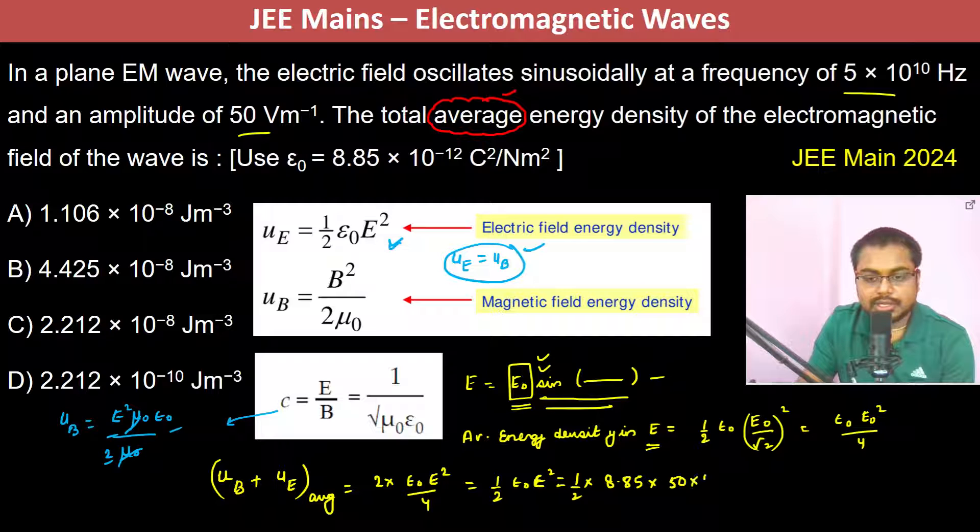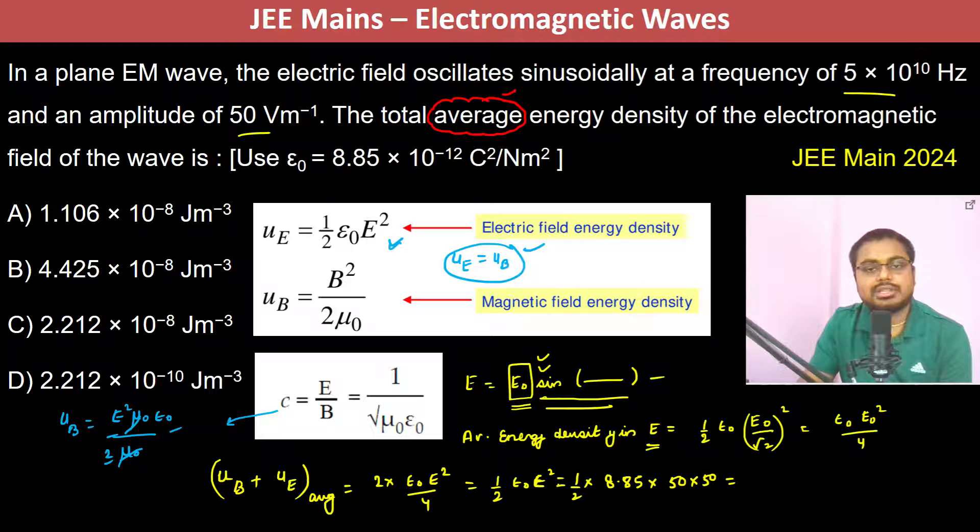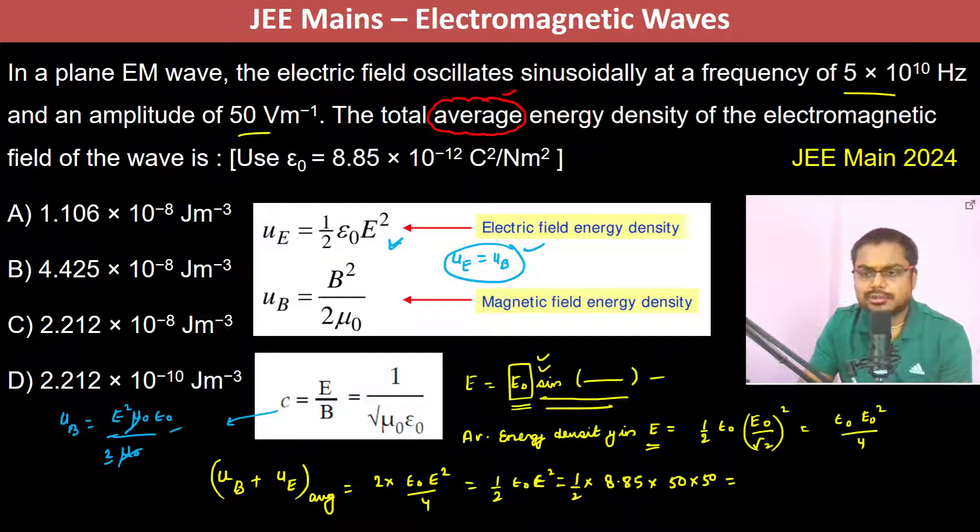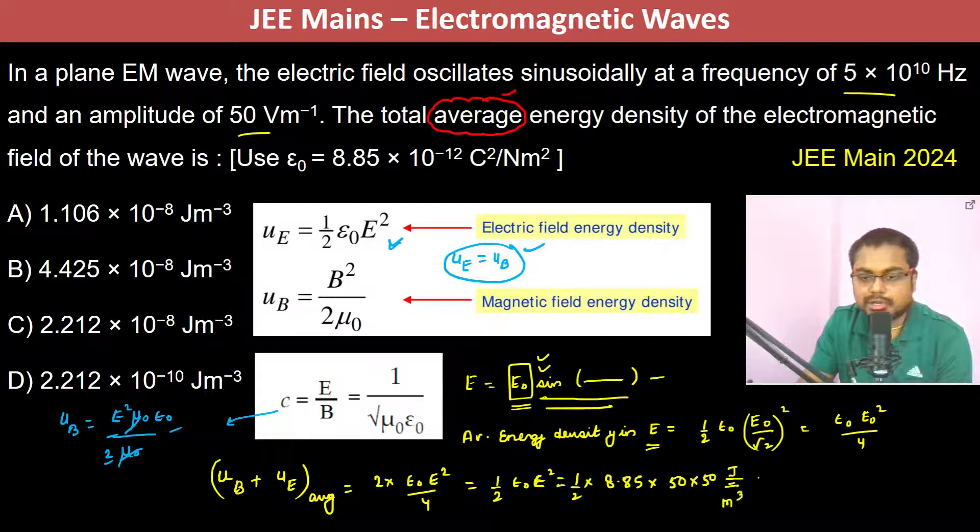E is 50 and again it is 50. Since everything is in standard units, so therefore this also is going to come in standard units, which is joule per meter cube.